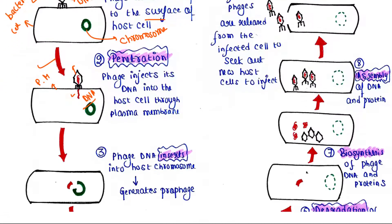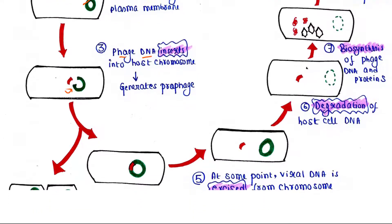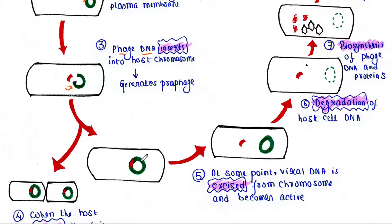The next step is that the phage DNA will be inserted into the host chromosome. At this point we will call this host chromosome a prophage — because the viral or phage DNA is now inserted in the bacterial chromosome.